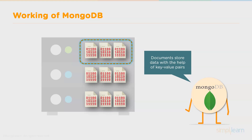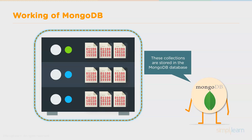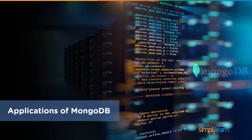MongoDB converts JSON data into a binary format known as BSON. MongoDB also makes provision for nested data. All documents are stored in a collection; these collections hold multiple documents, and since MongoDB is schema-less, the documents in one collection need not be similar. These collections are stored in the entire MongoDB database. The provision for nested data makes fetching of data extremely efficient compared to other databases.